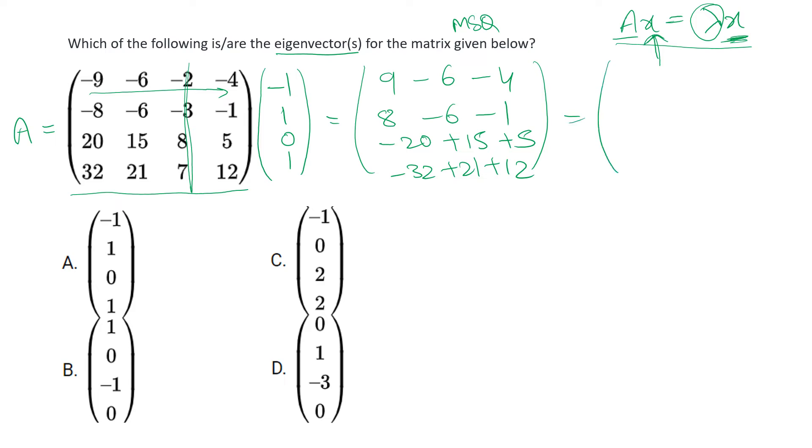So the result is minus one, one, zero, and one. As you can see, the result is actually one times x, so the value of lambda is one and x is the same column matrix we got. So option A is correct, it is one of the eigenvectors for this matrix.